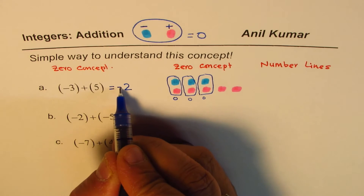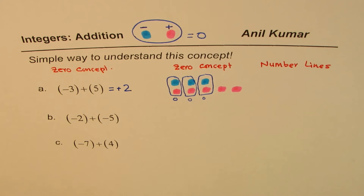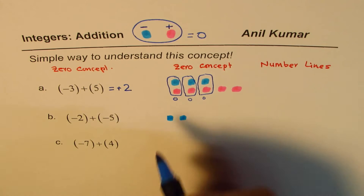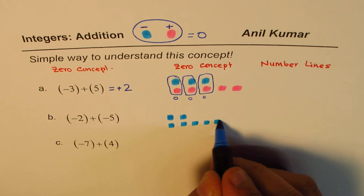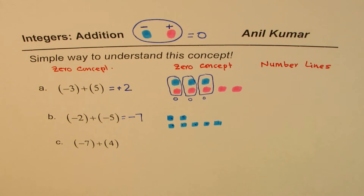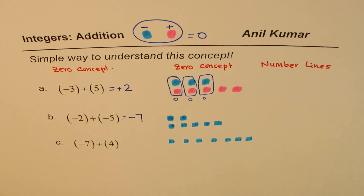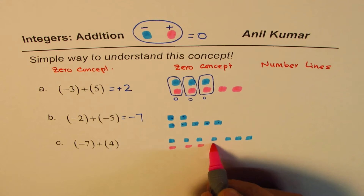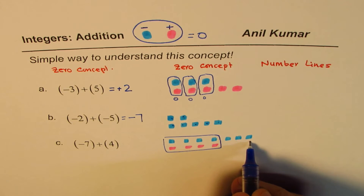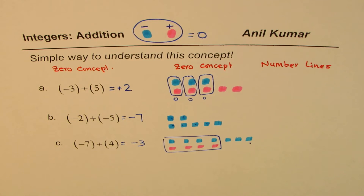When the answer is positive I may not write the plus sign — that is understood. Now applying the zero concept: minus two means two negatives, minus five means five more negatives — one, two, three, four, five — so all seven are negative, giving minus seven. For the next one, negative seven and positive four: the four positives cancel with four negatives, leaving three negatives, so the answer is minus three.